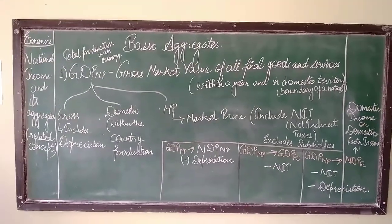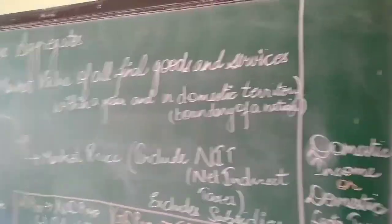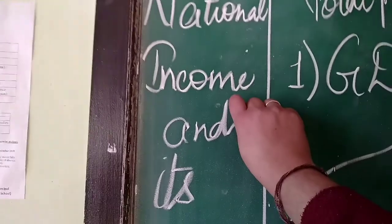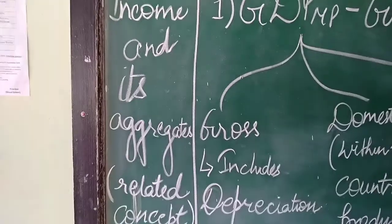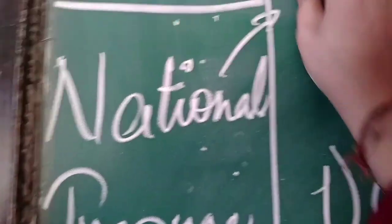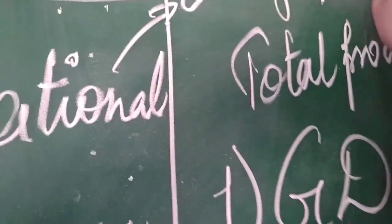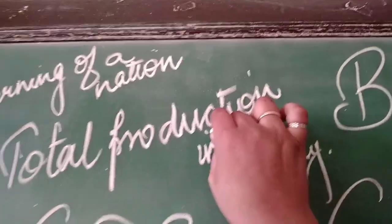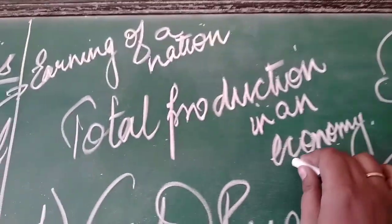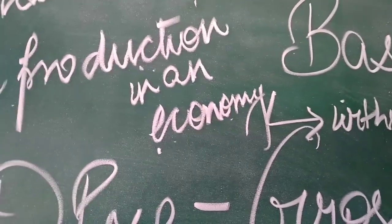Once again we have assembled on this online learning platform for physical connectivity. I'm presenting the same economics class on national income, which includes aggregate relatives. When we assess earnings of the country, national income is the earning of a nation. It is the total production in an economy, within the country, within the nation.